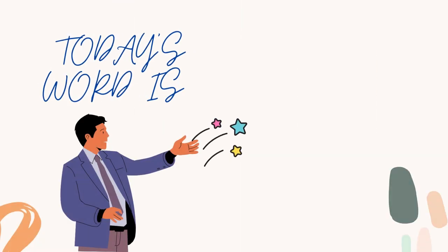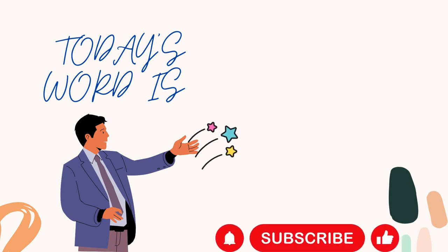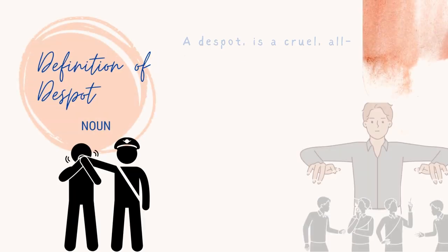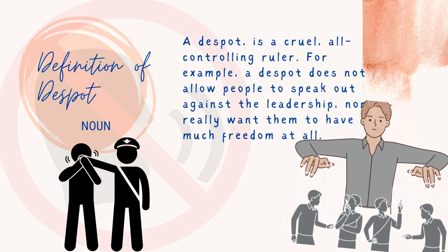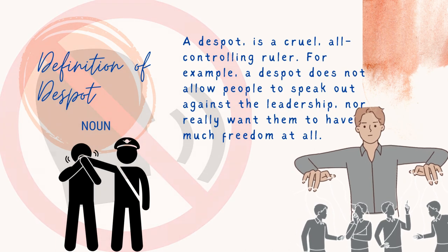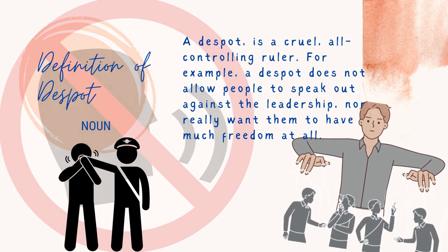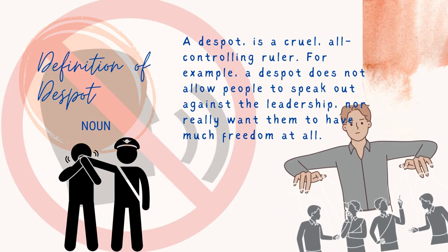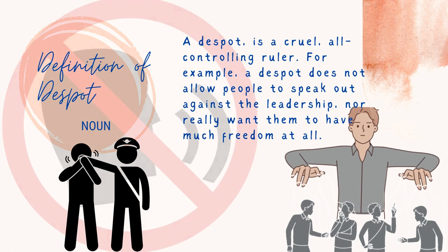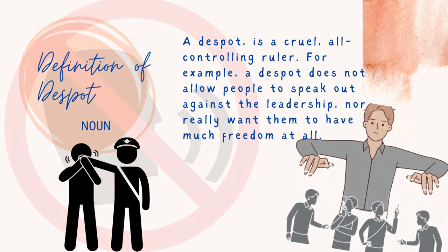Word of the day is: Despot. A despot is a cruel, all-controlling ruler. For example, a despot does not allow people to speak out against the leadership, nor really want them to have much freedom at all.